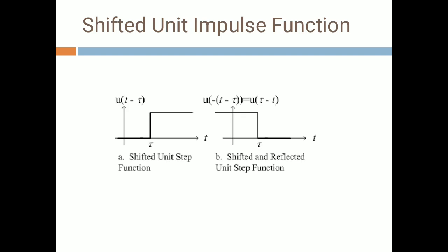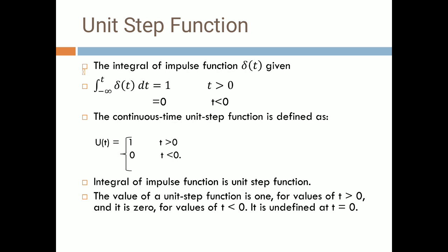The shifted unit impulse function: you shift the impulse signal by some fixed amount. If you subtract a fixed time from the signal, it will be shifted to the right side; if time is added, it will be shifted to the left side. That is the shifted unit impulse function.